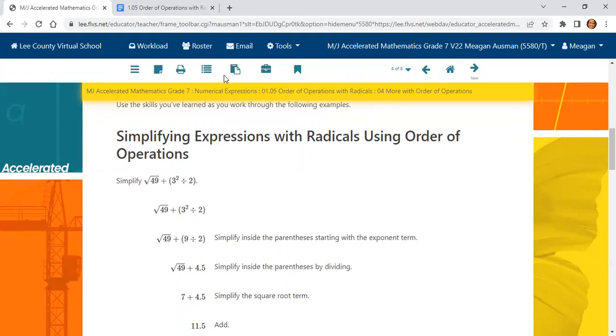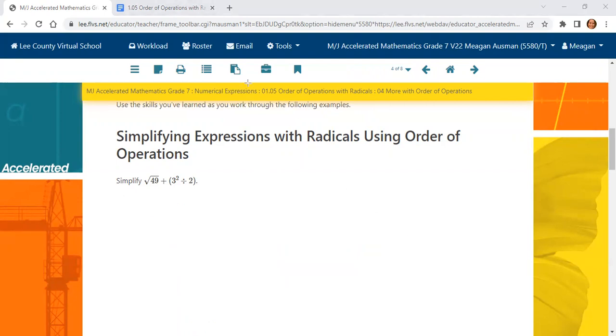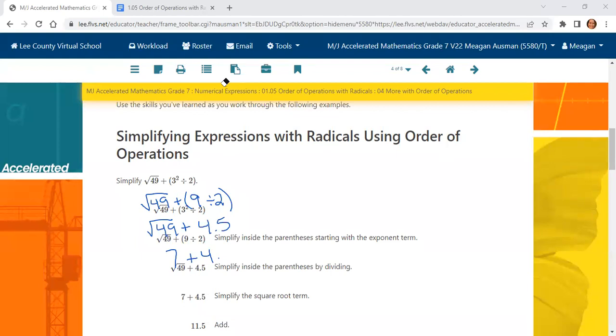So I'm going to go ahead and just give myself some clear space here. We don't want to see all these answers yet. Let's go ahead and work it out. So we have the square root of 49 plus 3 squared divided by 2 inside of parentheses. So I am going to do my parentheses first. 3 squared is 9. Now my next step, I still need to do my parentheses. 9 divided by 2 is 4.5. Now I can do the square root of 49, which is 7. 7 plus 4.5 equals 11.5. Remember, we have to line up our decimal points. So even though it's 7, it's really 7.0. And then the 4.5 is there and we can add it together.